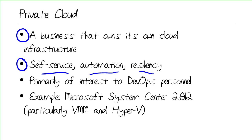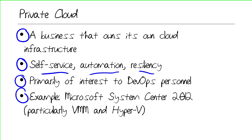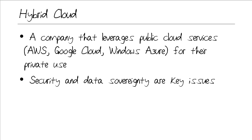Resiliency. This is pretty expensive to do in a purely private, roll-your-own service, and therefore the private cloud is primarily of interest to DevOps — people who are software developers or systems administrators or both. An example of a private cloud service would be Microsoft System Center 2012, in particular Virtual Machine Manager and Hyper-V 3.0.